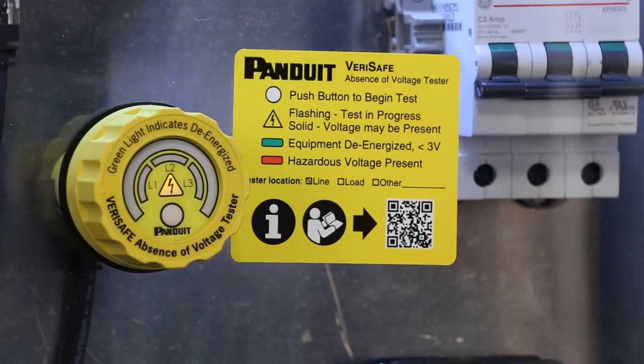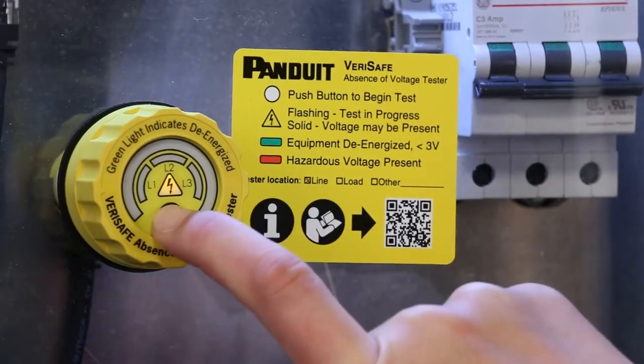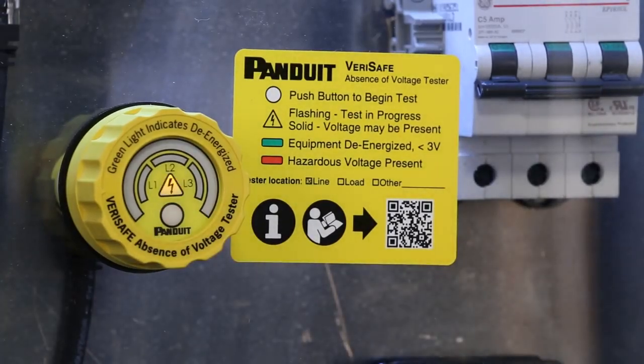But what if you get a yellow caution light? Let's demonstrate this condition. We will press the button to activate the test. The device returns the yellow caution light, indicating that there was a problem with the test. This could be from residual voltage in the system or a disconnected sensor lead.